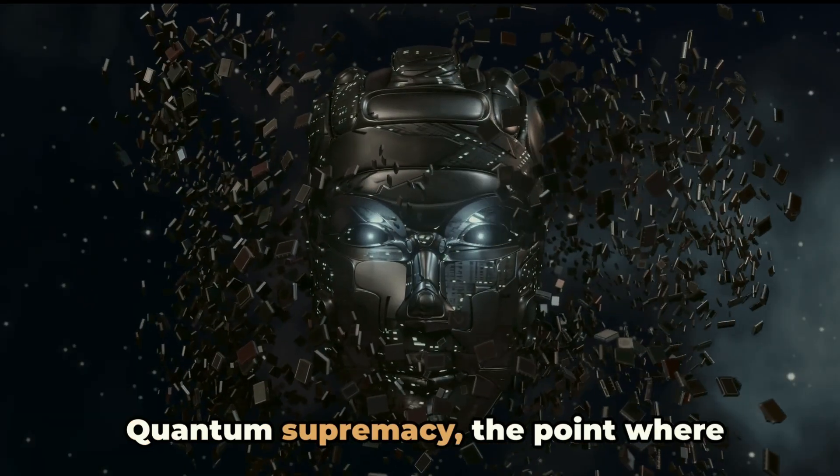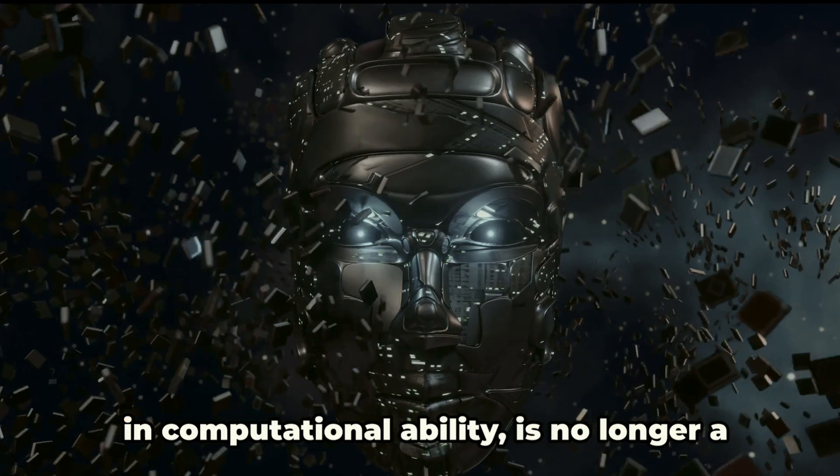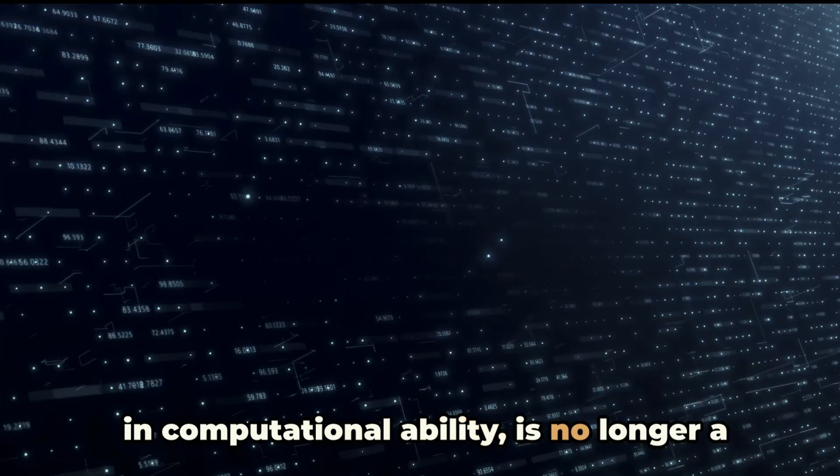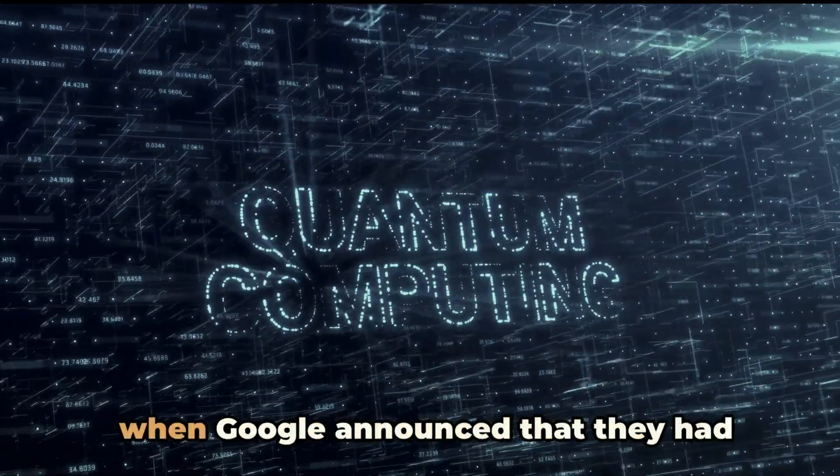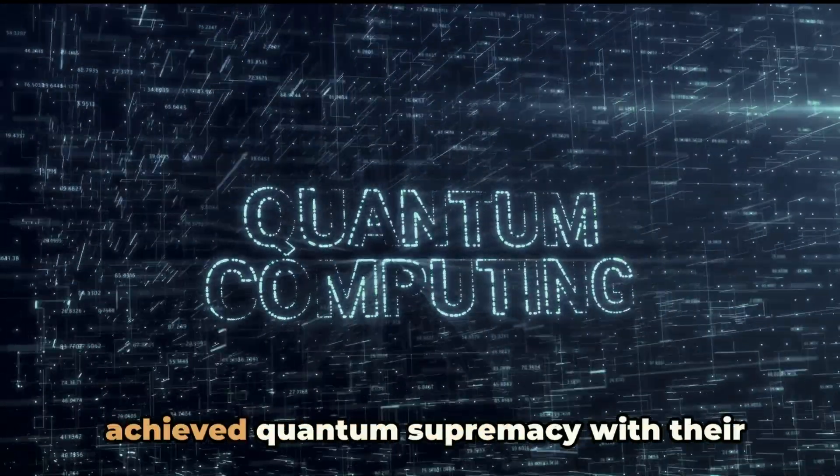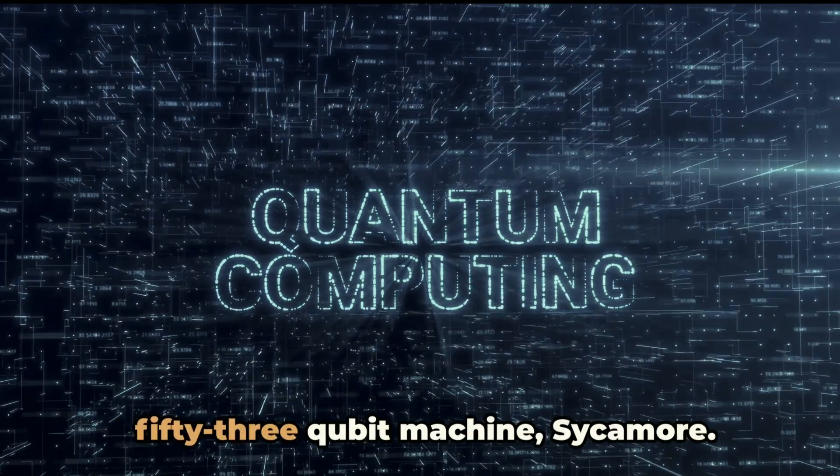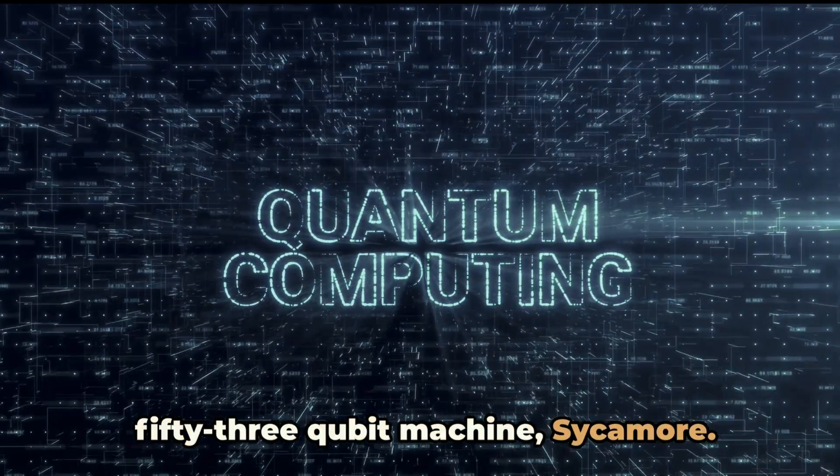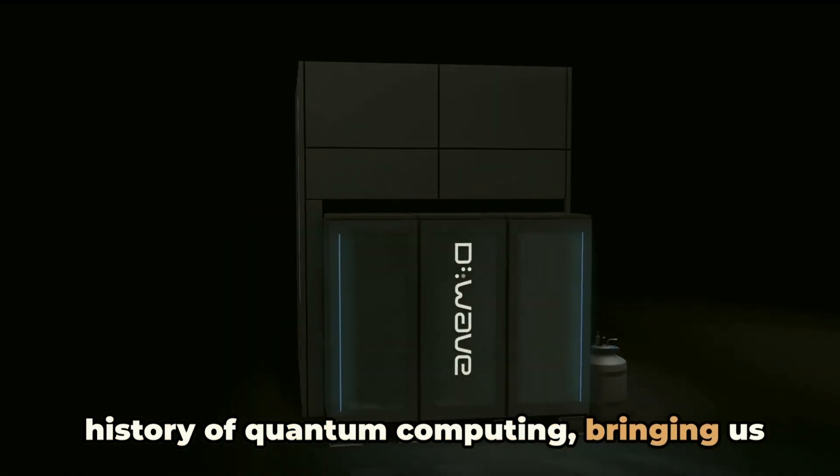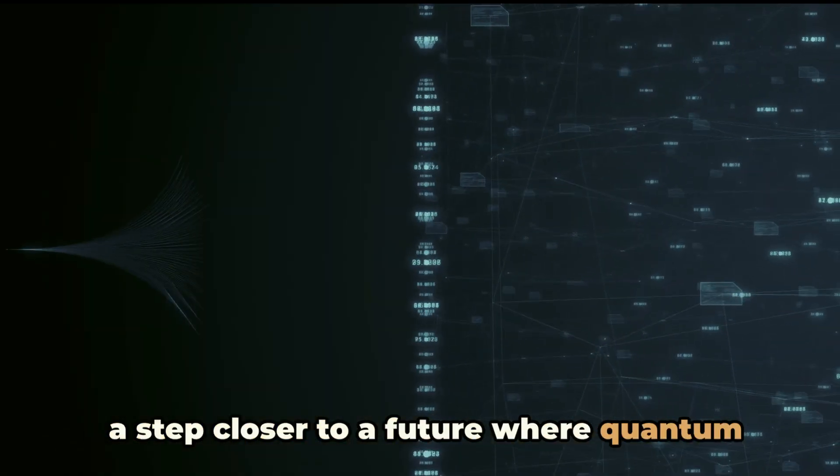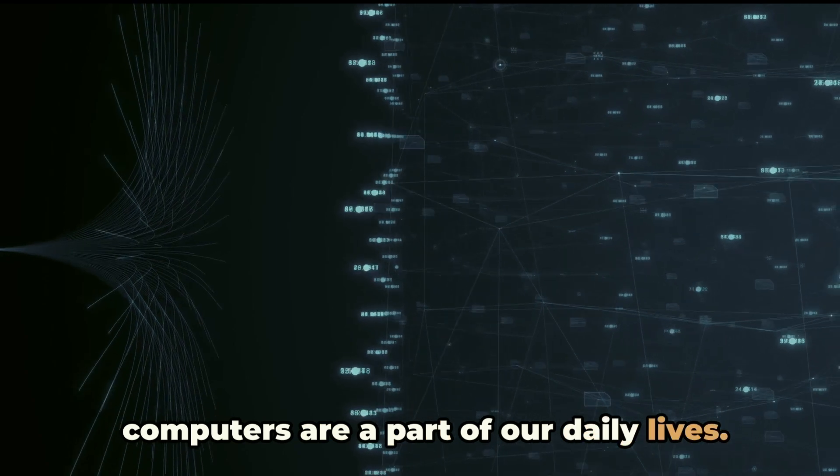Quantum supremacy, the point where quantum computers surpass classical ones in computational ability, is no longer a distant dream. The most recent breakthrough came in 2019 when Google announced that they had achieved quantum supremacy with their 53-qubit machine, Sycamore. This marked a pivotal moment in the history of quantum computing, bringing us a step closer to a future where quantum computers are a part of our daily lives.